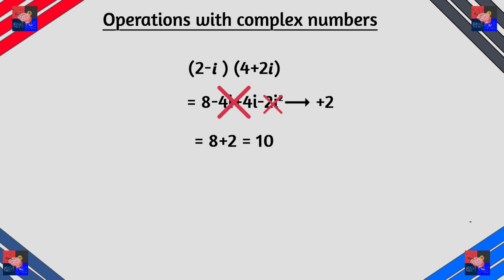Outer 2 times 2i which is 4i. Last is negative i times 2i. So that's negative 2i squared. If we look at what we've got we can cancel out the minus 4i and plus 4i.